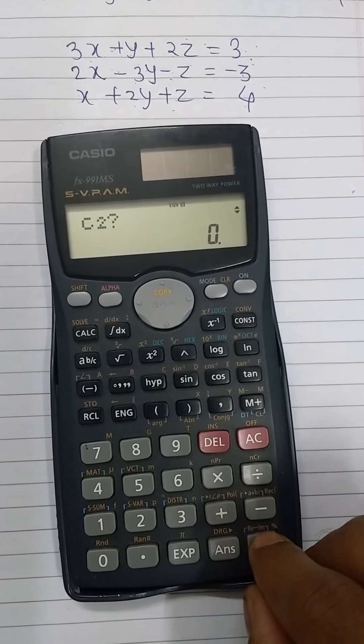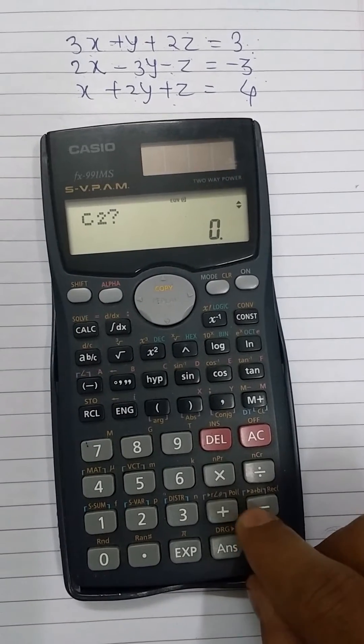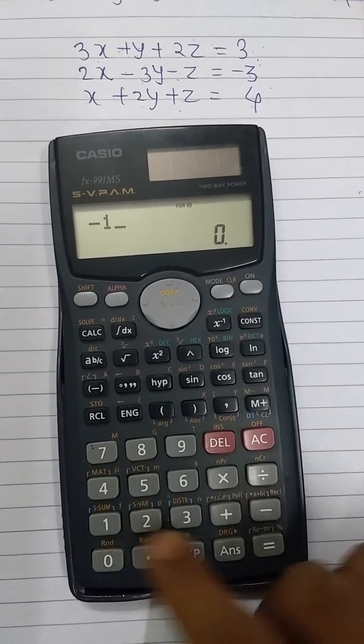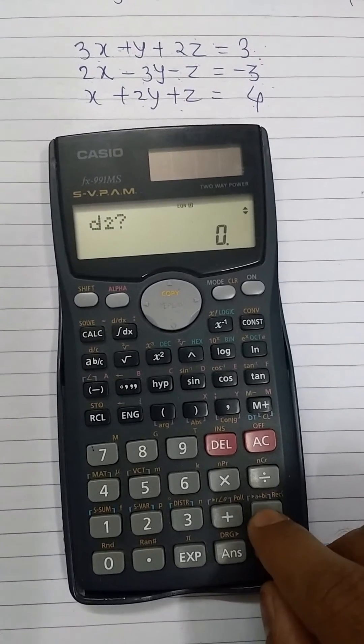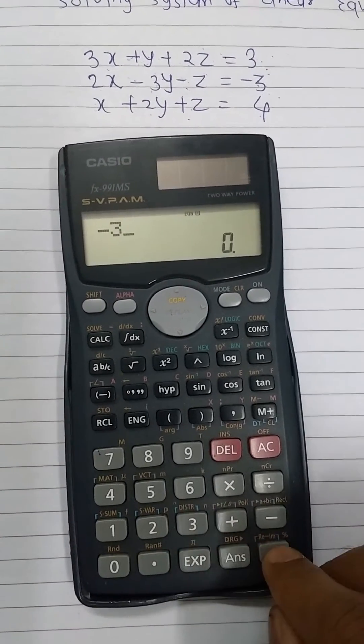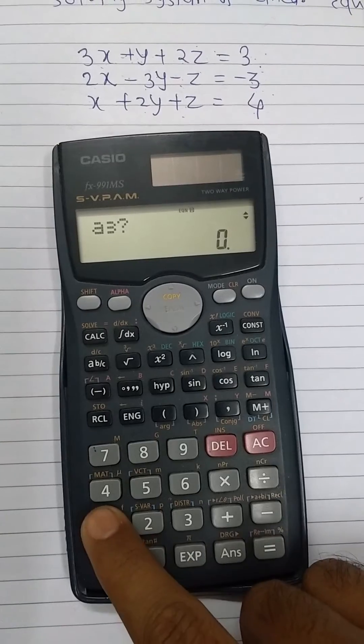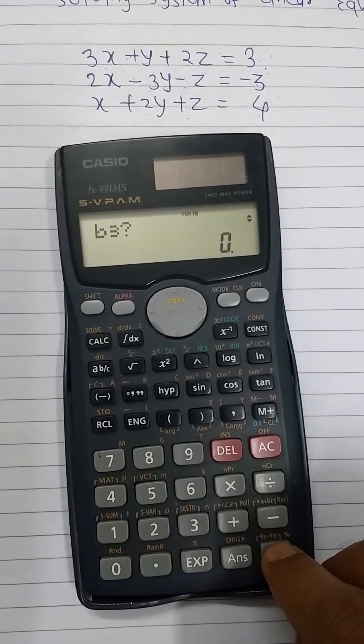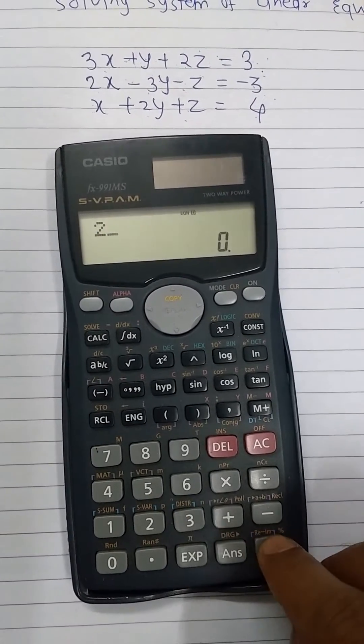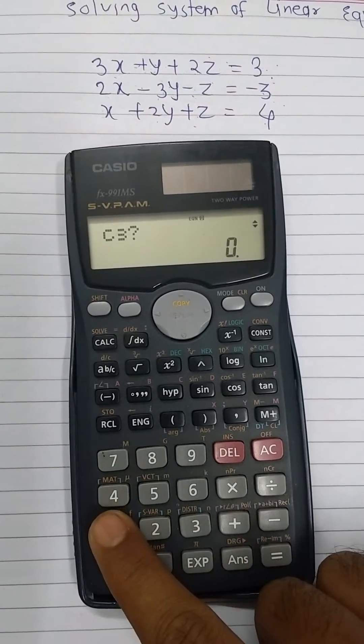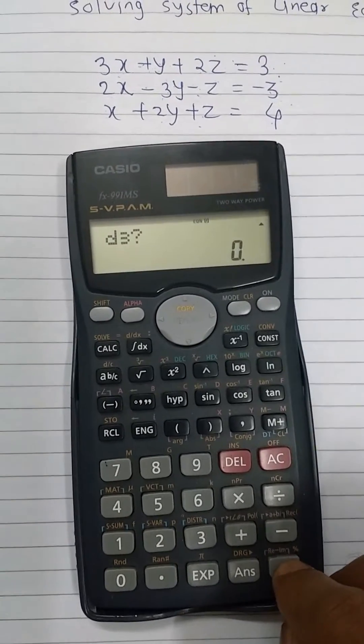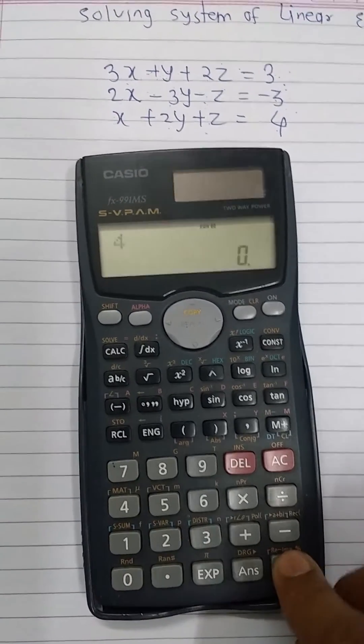Equal button. c2 is equal to minus 1. Equal button. d2 is equal to minus 3. Equal button. a3 is equal to 1. Equal button. b3 is equal to 2. Press equal button. c3 is equal to 1. Press equal button. d3 is equal to 4. Press equal button.